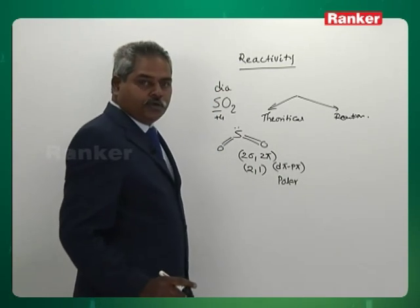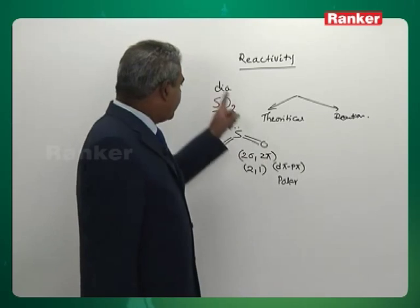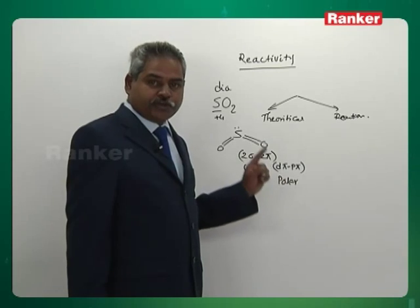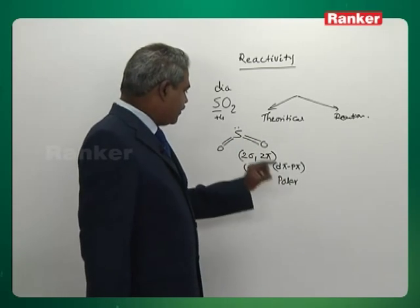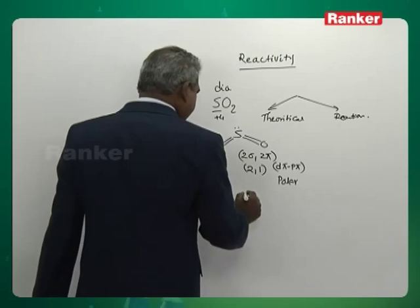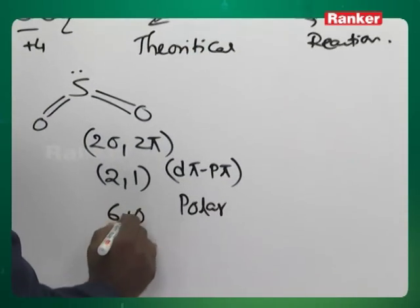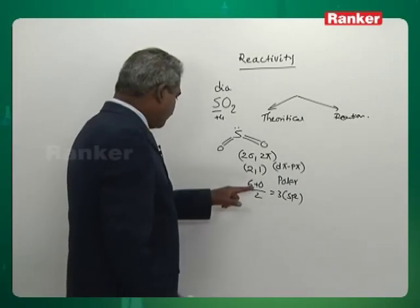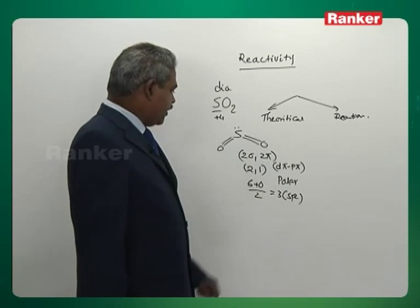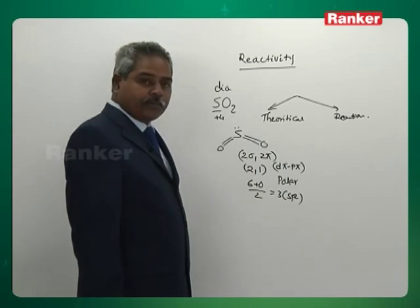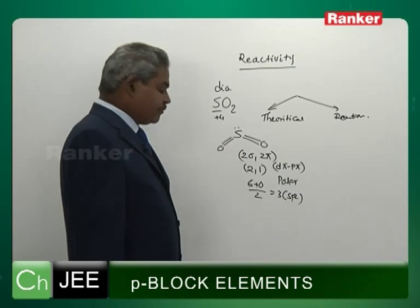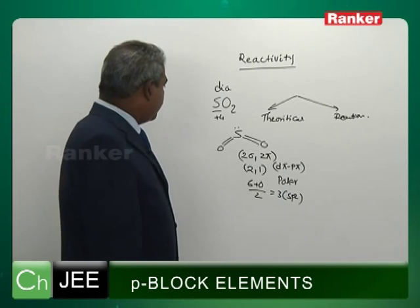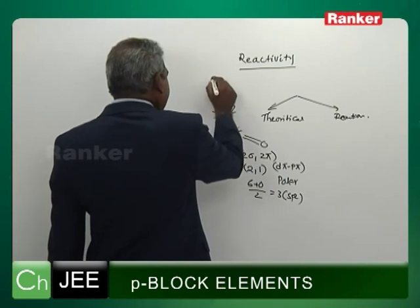How can we know? You know the total number of electrons — if it's an even number, it is diamagnetic. So we discussed the structure, the shape, the hybridization, whether it is polar or not, the number of d-pi p-pi bonds. And the hybridization: (6 + 0) / 2 = 3, so it is sp2. So the formula for hybridization, the rule for polarity, the number of d-pi p-pi bonds, the number of lone pairs, the structure, the oxidation state, the magnetic nature. And you also know that sulfur dioxide is an acidic oxide.